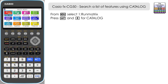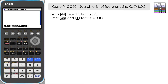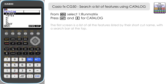If you go to Run Matrix from the menu and then press Shift and 4, you'll access the catalogue. You'll first be presented with a list of the shortcut functions which we can search, but we're going to come back to this a little bit later in the video.